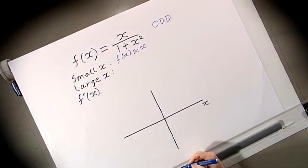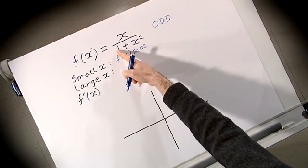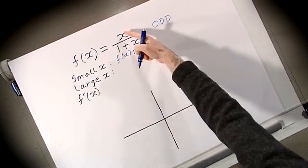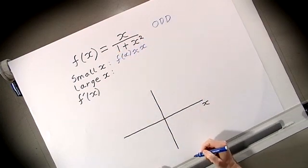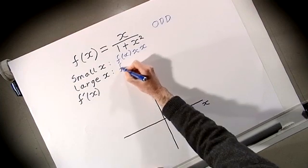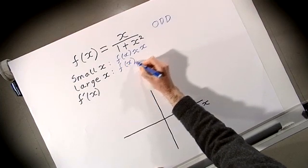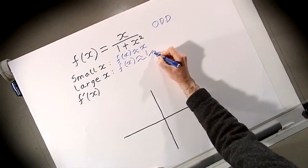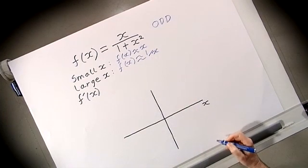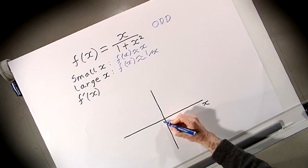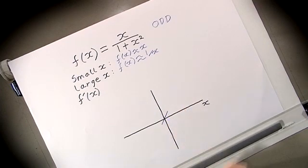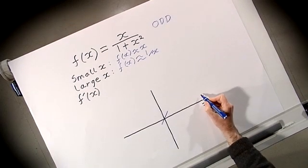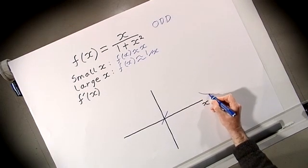When x is very large, x² is large compared to 1, so the function is approximately equal to x/x² = 1/x. We can sketch that when x is very small the function looks like f = x, and when x is very large f(x) ≈ 1/x, which is a decreasing function.